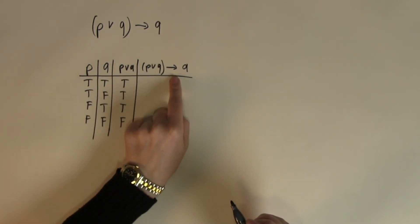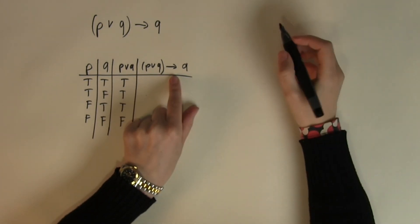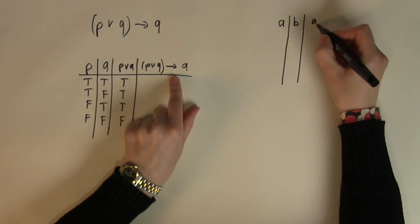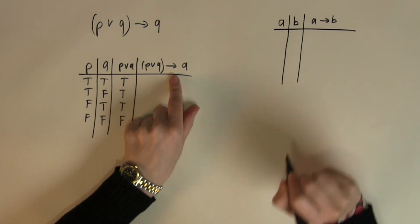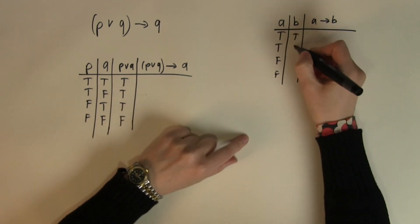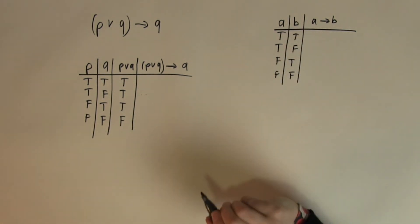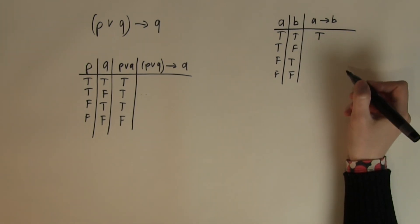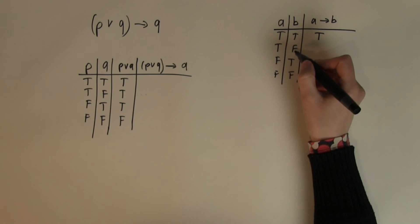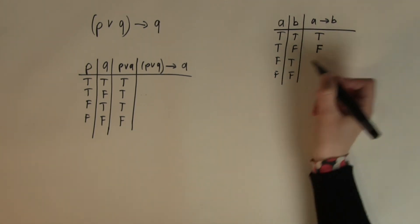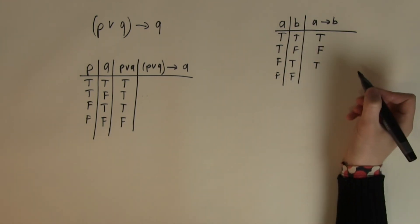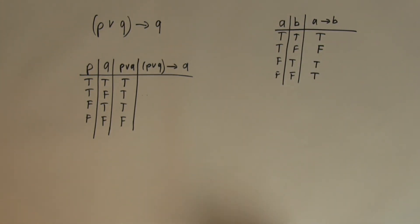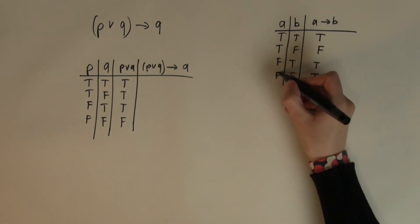How about the IF-THEN? Let's recall its truth table. If both inputs are true, IF-THEN returns true. If a is true but b is false, IF-THEN returns false. If a is false but b is true, IF-THEN returns true. And if both are false, IF-THEN again returns true. This is one of the more difficult tables to remember, so I suggest you learn it very well.